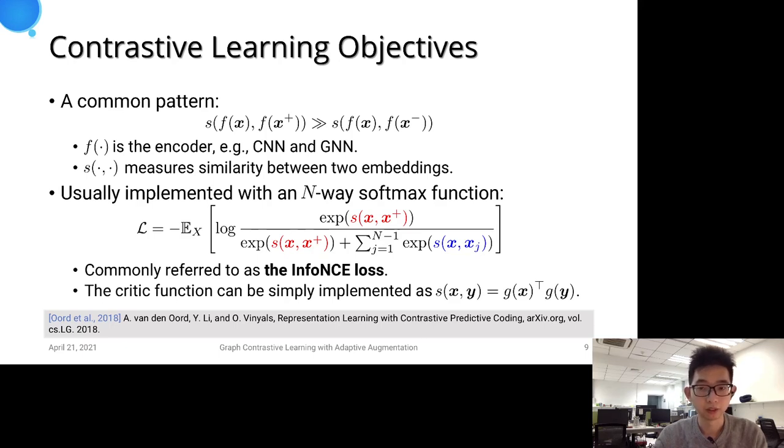The score function is encouraged to assign large values to positive samples and small values to negative samples. Here, x is also commonly referred to as an anchor data point in self-supervised learning literature.